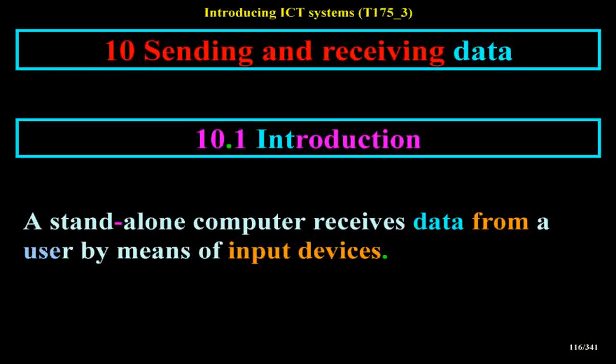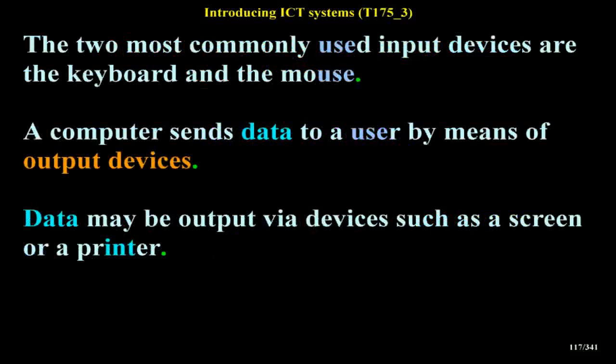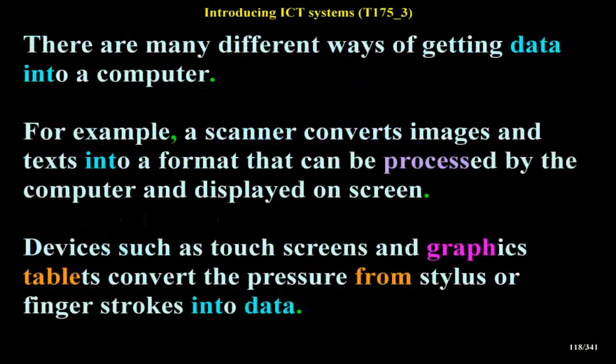A stand-alone computer receives data from a user by means of input devices. The two most commonly used input devices are the keyboard and the mouse. A computer sends data to a user by means of output devices, such as a screen or a printer. There are many different ways of getting data into a computer — for example, a scanner converts images and text into a format that can be processed by the computer and displayed on screen.